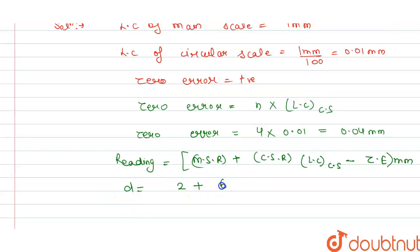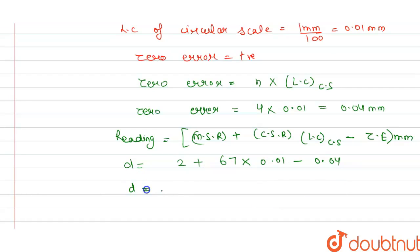And this is 0.04. So on solving this we get d equals to 2 plus 0.67, and this is minus 0.04.